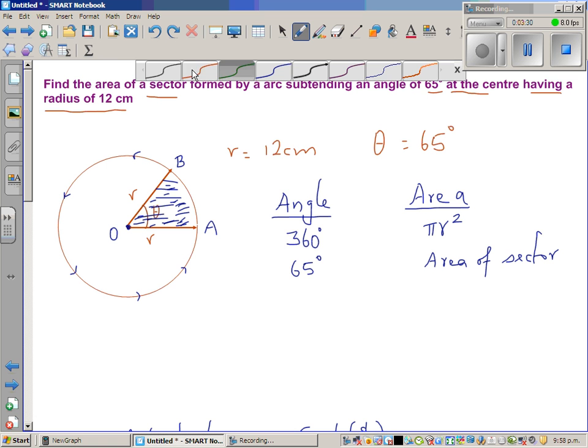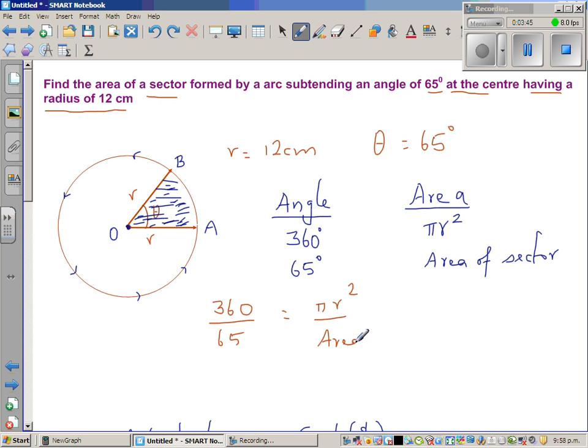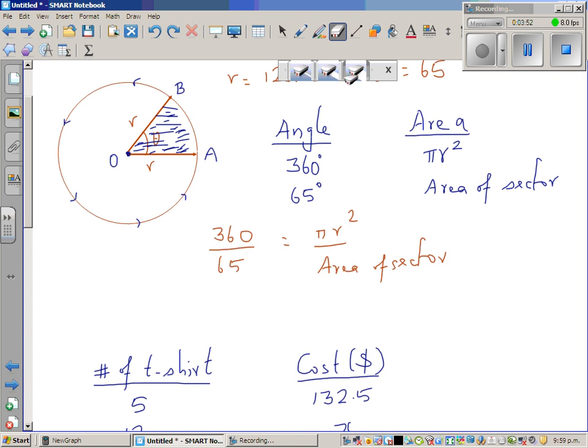So this is an example of simple ratio and proportion. This becomes 360 over 65 equals π r squared over area of sector.